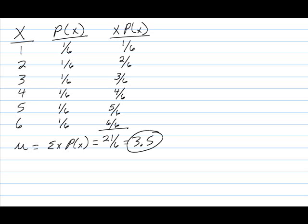You will always create this same table, create the column of x times p of x, sum that column, and that is your mean in a discrete probability distribution.